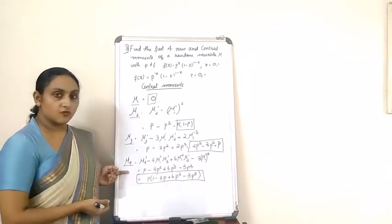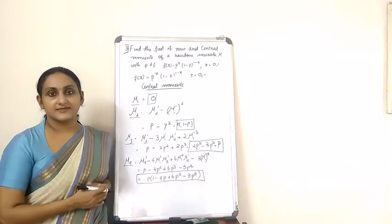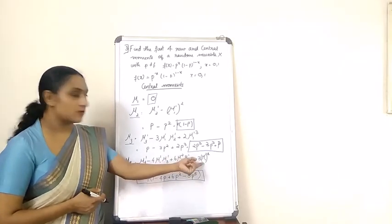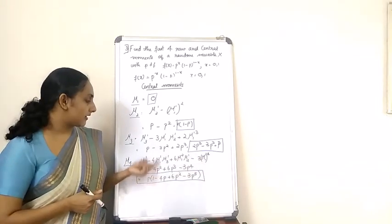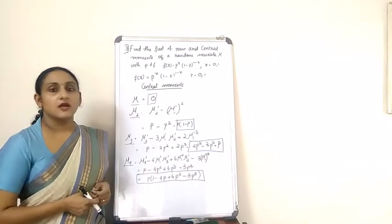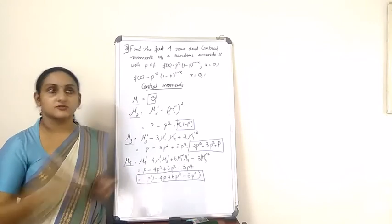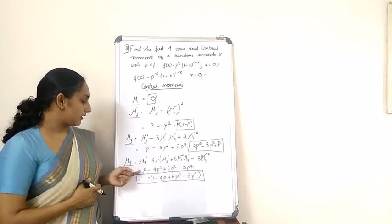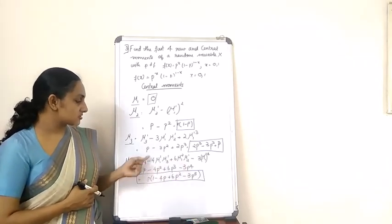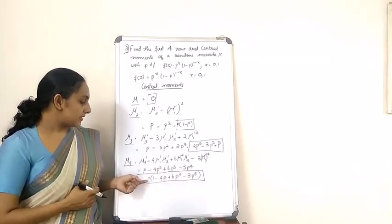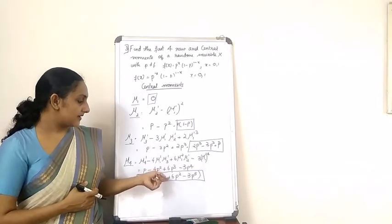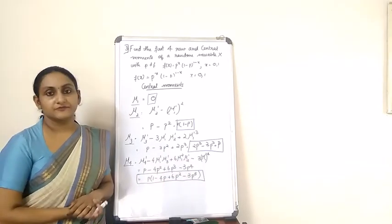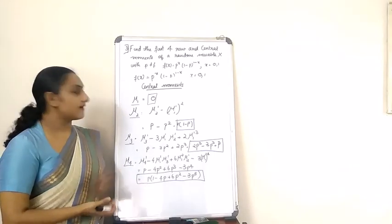For μ₄, since μ₄' = p as well, substituting all the raw moments into the formula gives μ₄ = p(1 - 4p + 6p² - 3p³). So these are the final answers for all four central moments.